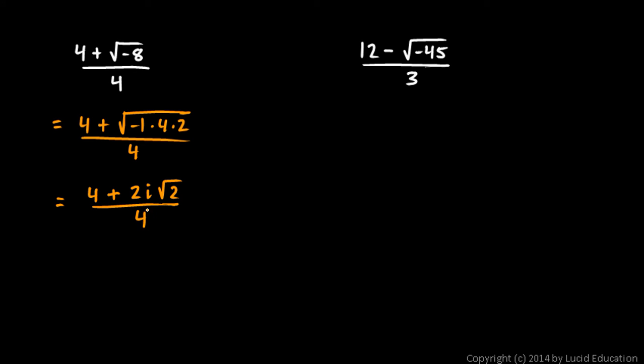And all of that is over 4. Now I notice that there's a 4 here, and a 2 here, and a 4 here, and all of those have 2 as a factor. So let's factor out the 2. You might be able to do this in your head, but I'll show you the step here. 2 times 2 plus i root 2, all of that over 4.